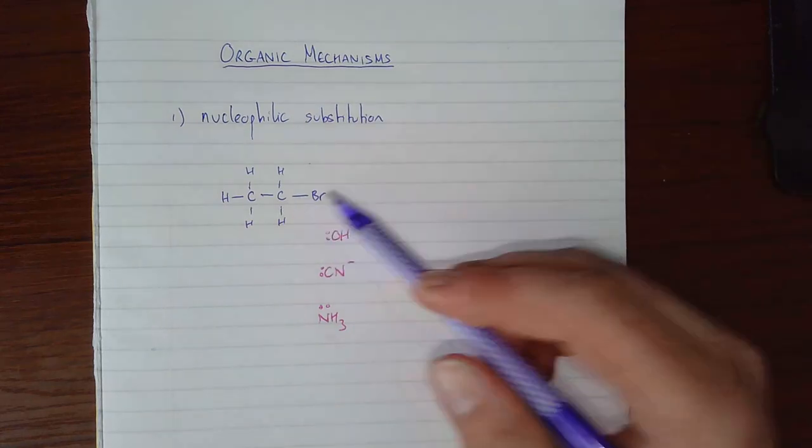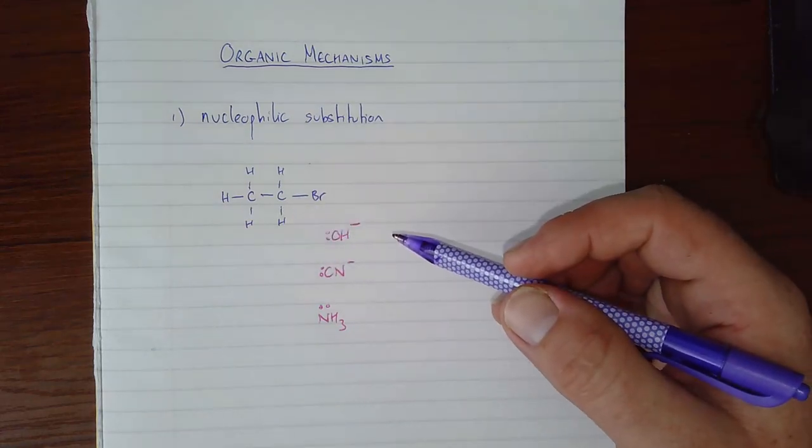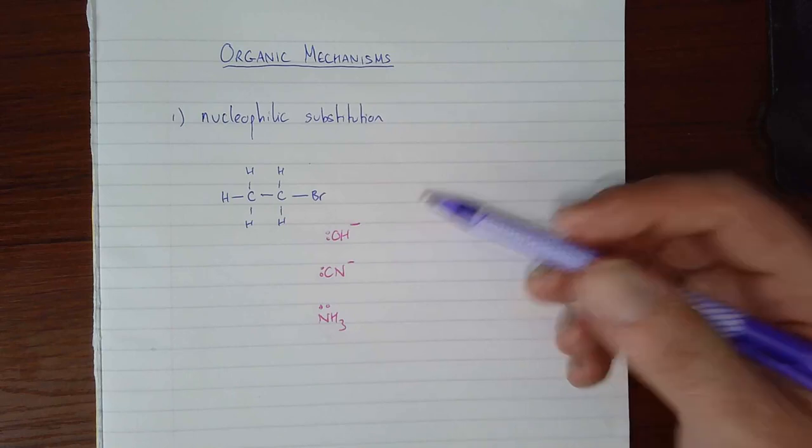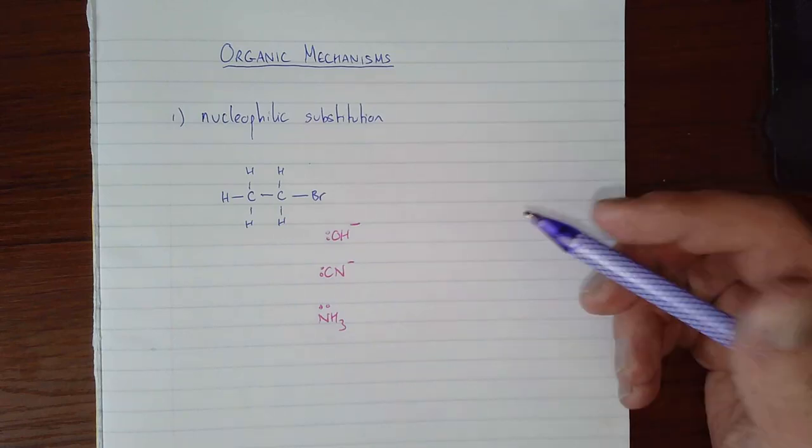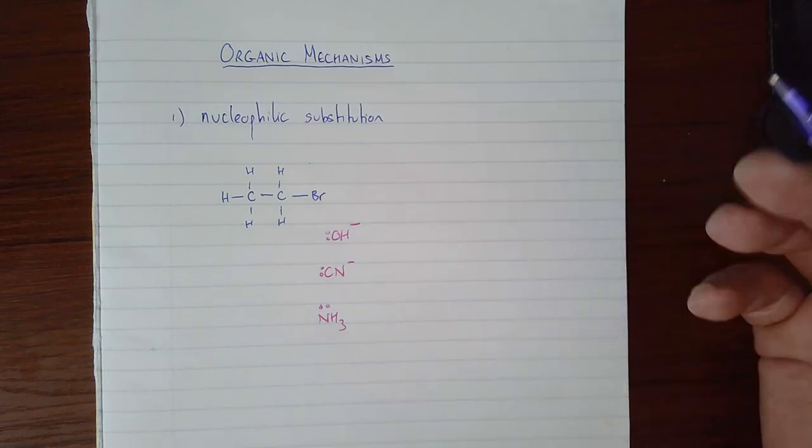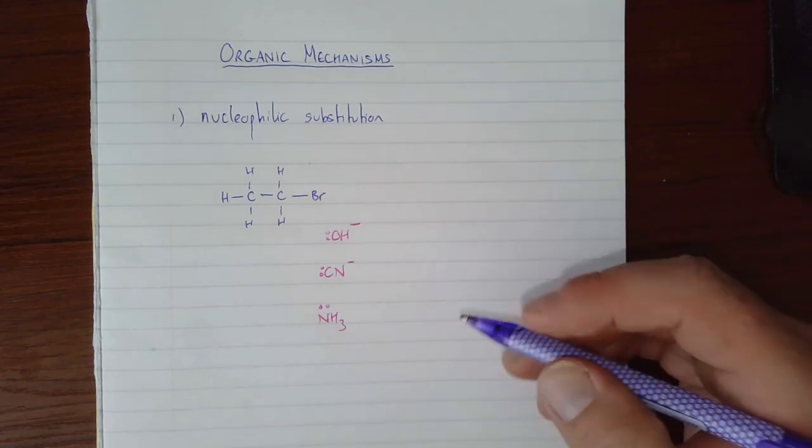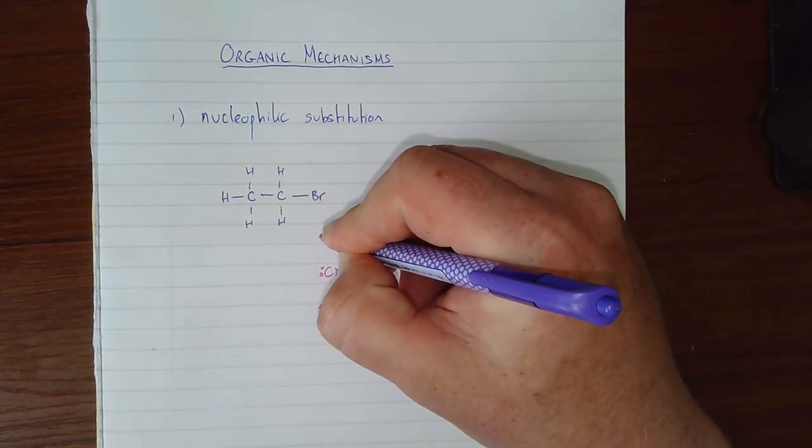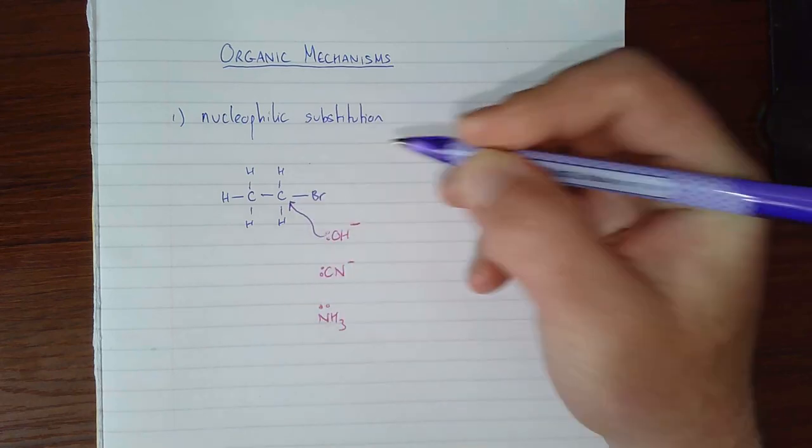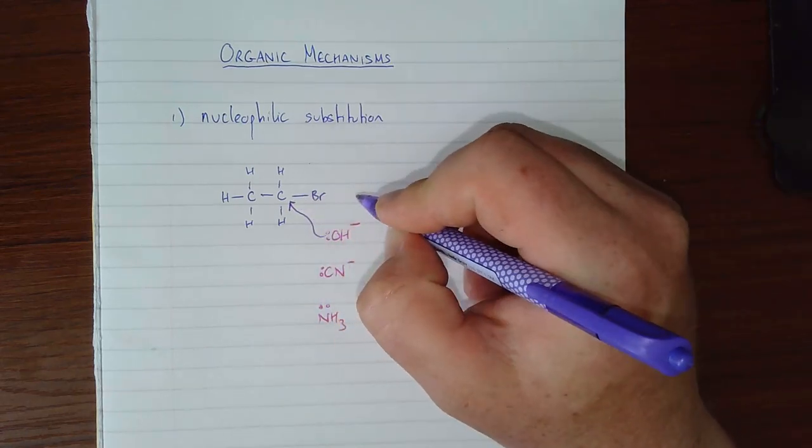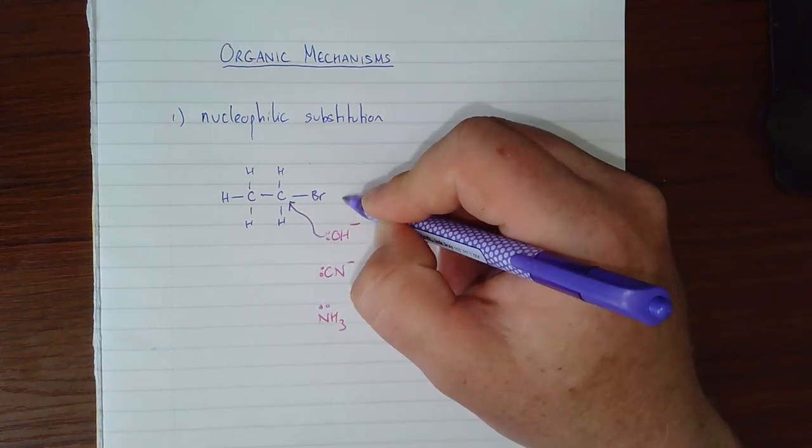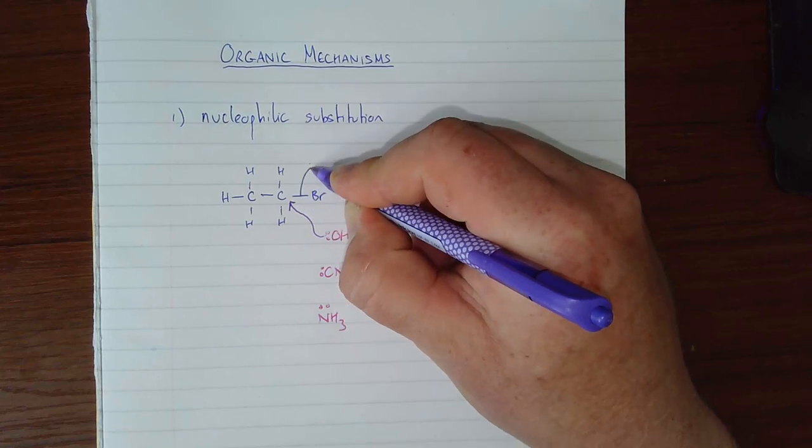Nucleophiles form coordinate bonds to electron deficient centers. All of the electron deficient centers we look at are carbons bonded to a group 7 element. A curly arrow from the lone pair on the nucleophile to a carbon that holds a group 7 atom, usually Br, causing the C-Br bond to break.